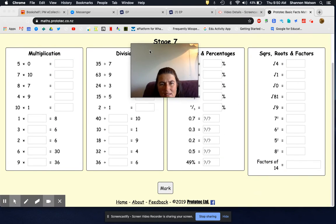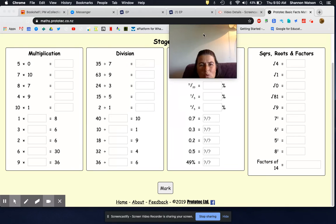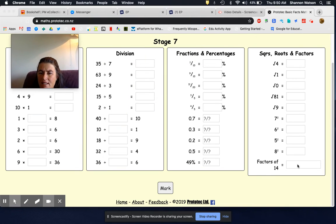Okay, so factors of 14, it's pretty fussy. It wants you to write one, gap, two, gap, seven, gap, 14, I think. If you put commas, it yells at you, I think.